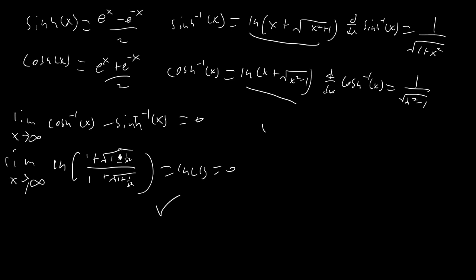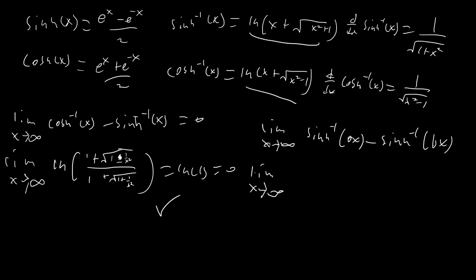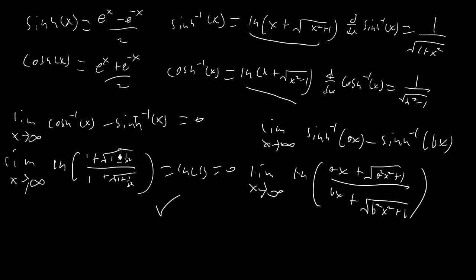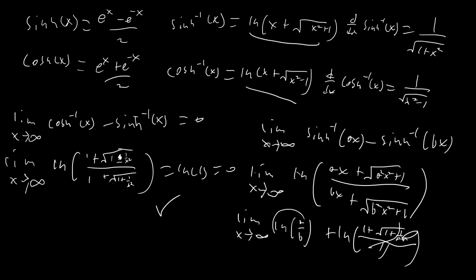The other limit we want is: as x → ∞, sinh⁻¹(ax) − sinh⁻¹(bx). Plugging into the natural log formulas and subtracting, we get ln((ax + √(a²x²+1)) / (bx + √(b²x²+1))). Using the divide-by-x trick, the terms with 1/x² go to 0, and we just end up with ln(a/b). That's all we need — let's jump into our integral.